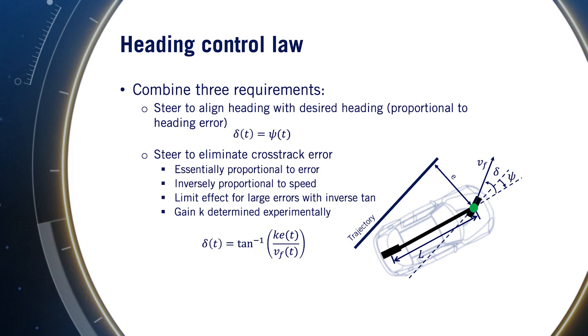Then, to eliminate cross-track error, a proportional control is added whose gain is scaled by the inverse of the forward velocity. The control is then passed through an inverse tan function, which maps the proportional control signal to the angular range of minus pi to pi. And finally, the steering angle command is capped to fall within the minimum and maximum steering angles delta min and delta max, which are usually symmetric about zero.